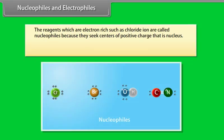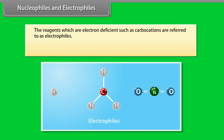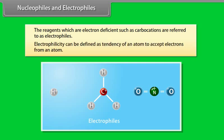Nucleophiles and electrophiles: reagents which are electron-rich, such as the chloride ion, are called nucleophiles because they seek centers of positive charge — that is, the nucleus. Nucleophilicity is defined as the tendency of an atom to donate electrons. Reagents which are electron-deficient, such as carbocations, are referred to as electrophiles. Electrophilicity is defined as the tendency of an atom to accept electrons from an atom.